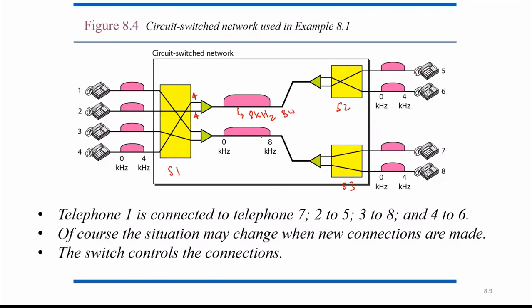The eight kilohertz bandwidth is represented on a graph starting from zero to eight kilohertz — so eight kilohertz bandwidth for each channel. Inside the switch, the internal connection is shown for reference only. Telephone one has a four kilohertz bandwidth from zero to four kilohertz — maximum minus minimum gives four kilohertz. It sends a signal with a bandwidth of four kilohertz, which passes through this line, then through the second link, and connects with telephone seven.